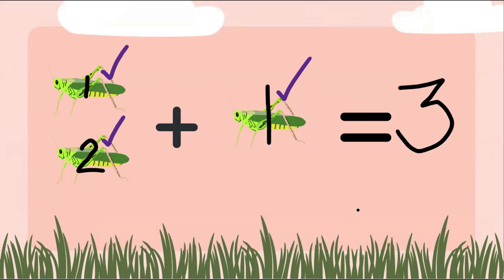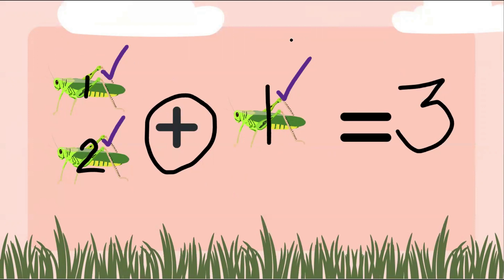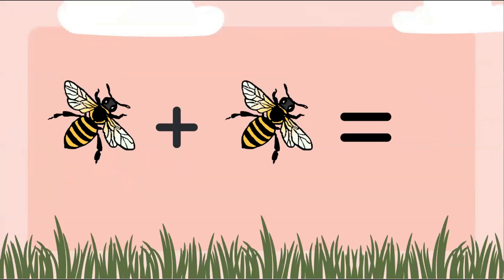Remember, when we're adding we use this symbol — this is the addition symbol. We're making our group larger, adding to the group. We had a group of two, then we add their new friend, so now our group is three. Here's another example: one bug plus one bug gives us two bugs — a total of two bugs.